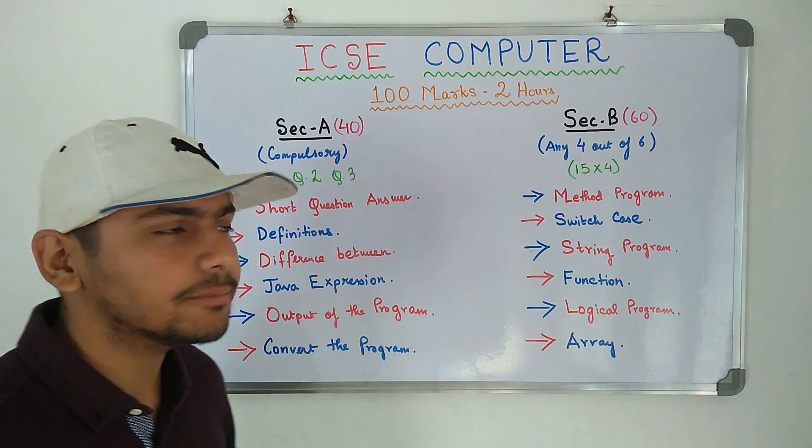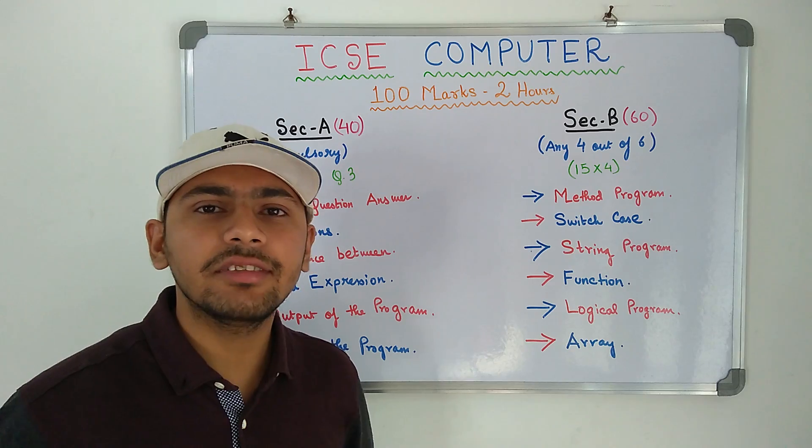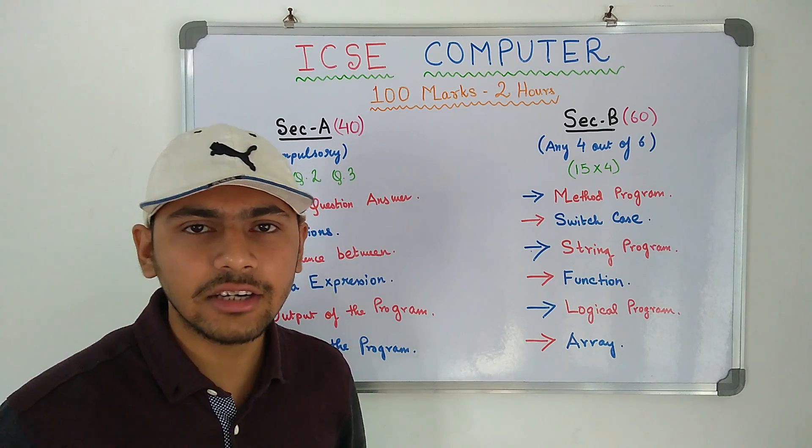What type of questions are asked over here? The first type is short question answer. That means state the reader type, give the characteristics and questions of that sort.